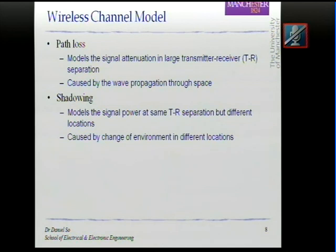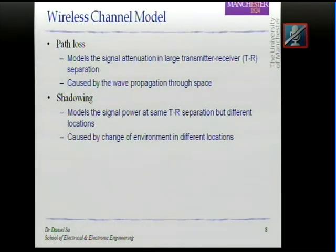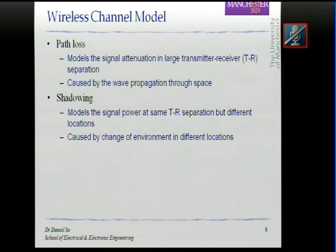Another level of modeling is shadowing. Shadowing describes the behavior of the signal at different locations. Assuming you are at the same transmitter-to-receiver distance — if you walk around in a circle, your distance from the transmitter stays the same, but you end up in different locations. Sometimes you may be outdoors, sometimes indoors, sometimes a building blocks the line of sight, and sometimes a building behind you provides an extra reflection that actually improves the signal. Shadowing describes this random behavior at a fixed distance but varying location.